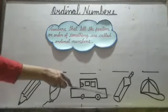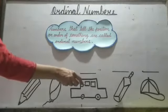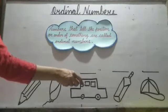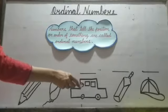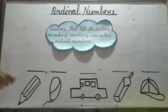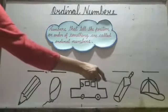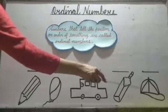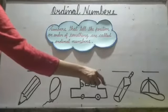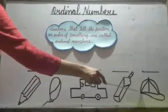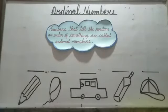Next is Bat. Bat is at the fourth position. So, the position of Bat is fourth. Next is Cap. Cap is at the fifth position. So, the position of Cap is fifth.